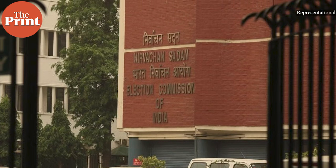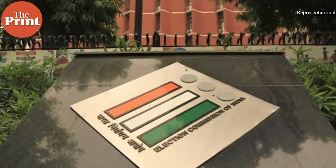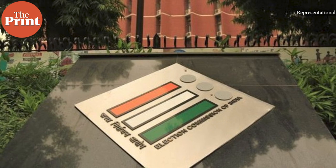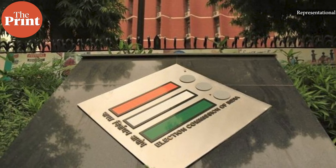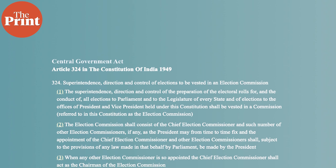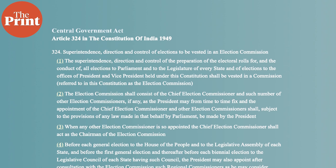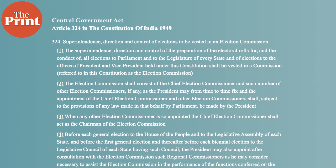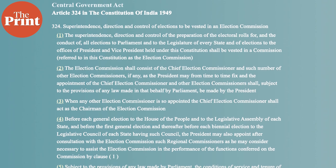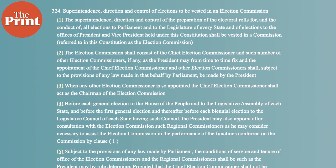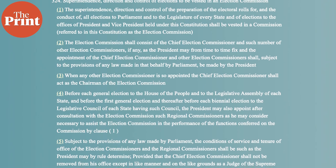There were two other related issues before the Supreme Court. One was whether election commissioners should be given the same level of protection as the Chief Election Commissioner with regard to their removal process. As per Article 324, the Chief Election Commissioner can be removed only through a process similar to removal of a judge — through a majority in both houses of Parliament on grounds of proven incapacity or misbehaviour. However, the Supreme Court ruled that election commissioners don't have the same protection for their removal.